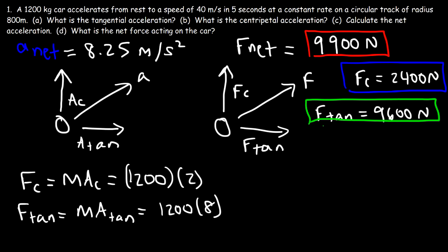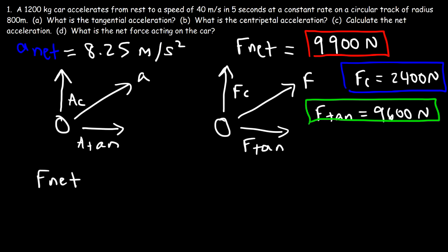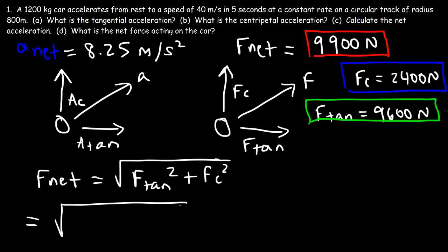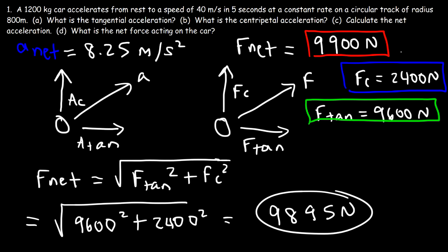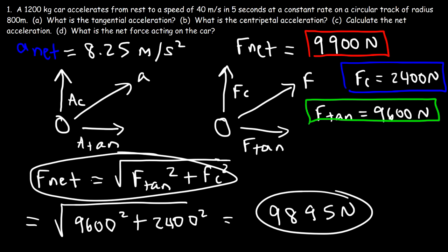We can confirm these answers agree with each other. The net force equals the square root of the tangential force squared plus the centripetal force squared. With a tangential force of 9600 and a centripetal force of 2400, that gives approximately 9895 newtons — which rounds to about 9900, matching our earlier result. So you can calculate the net force either way: using F = ma directly, or using this component formula.